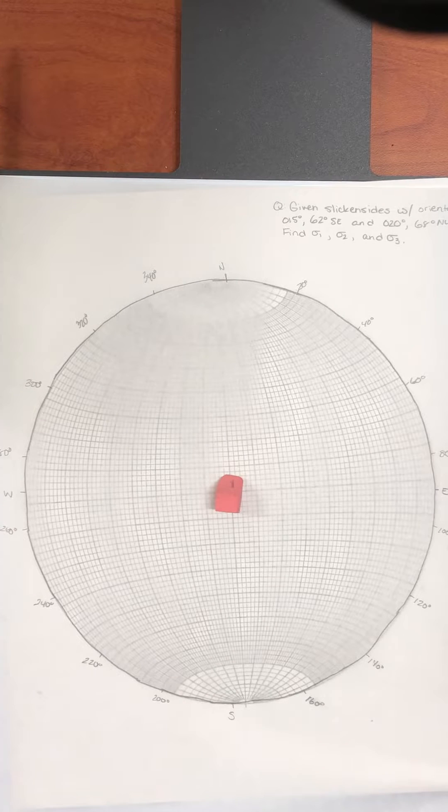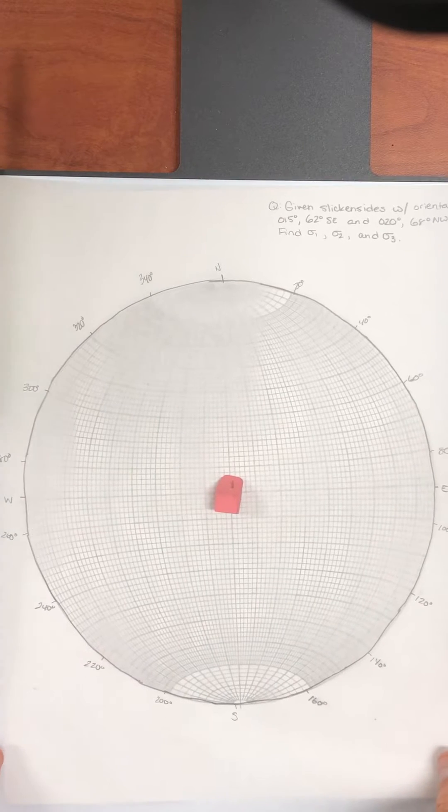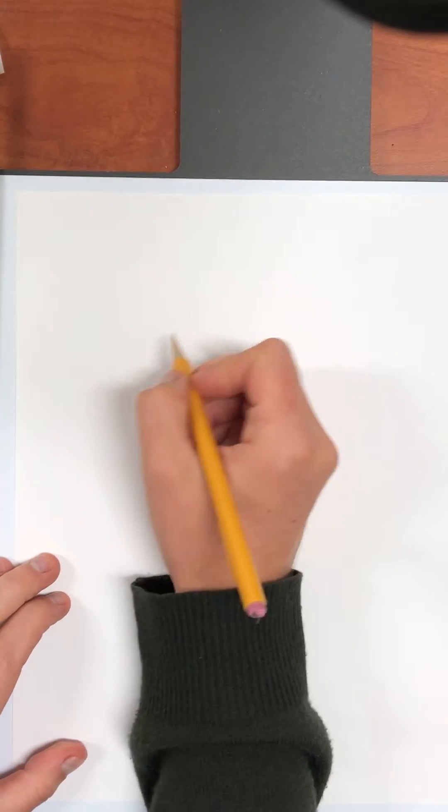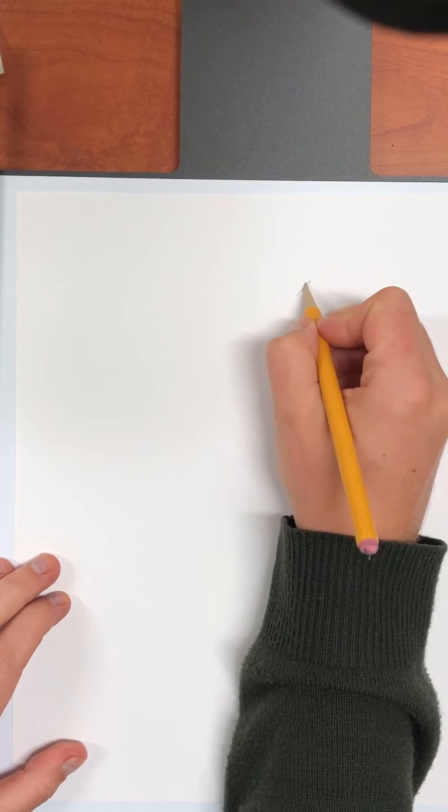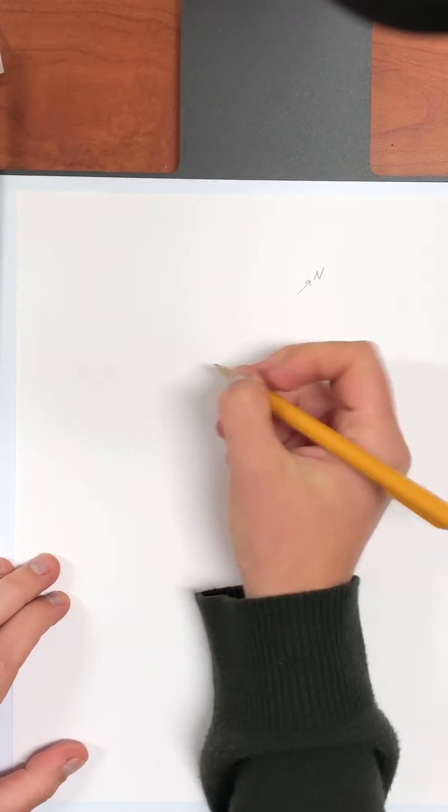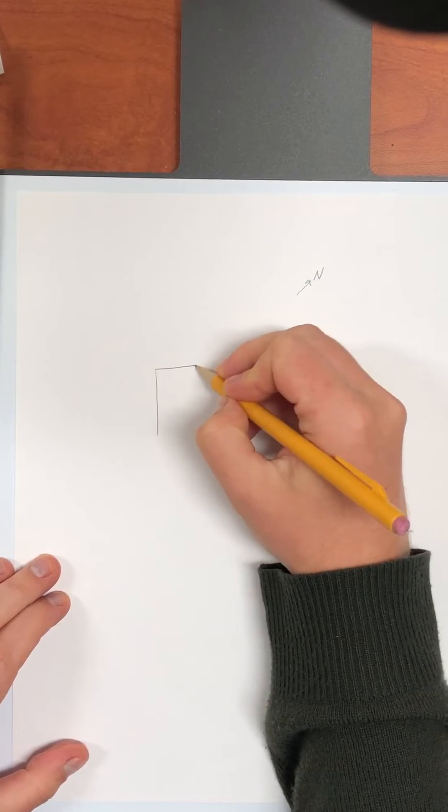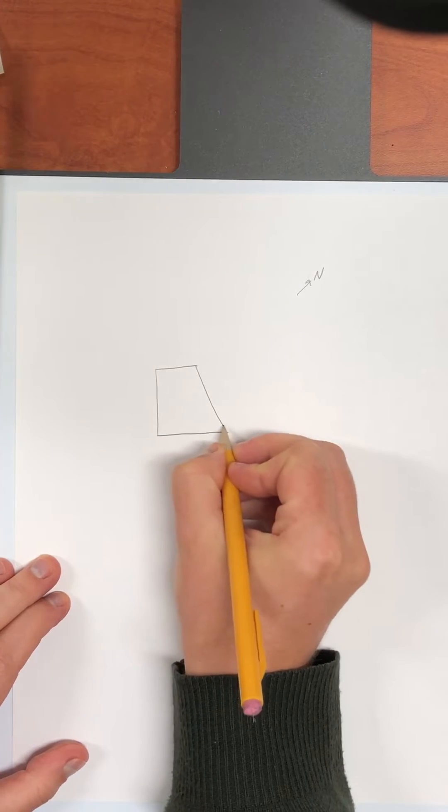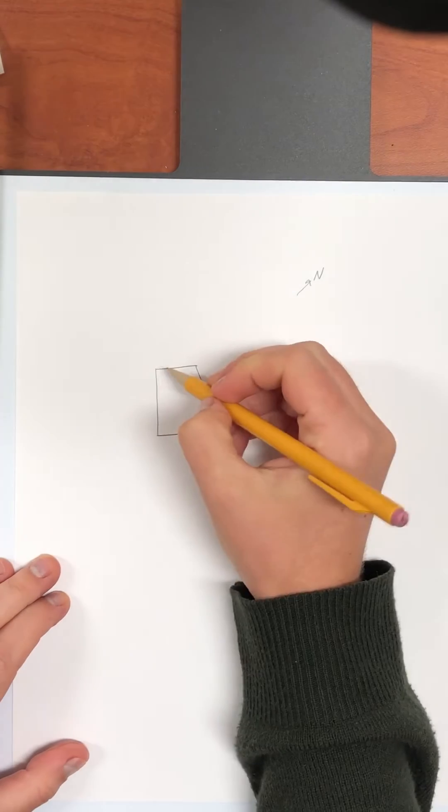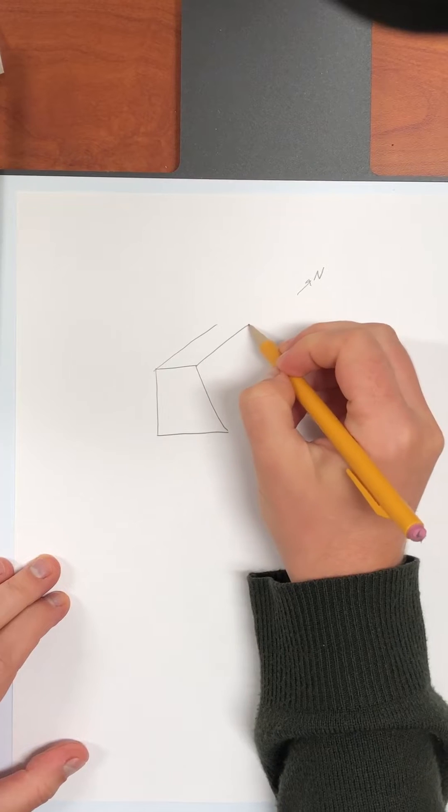So before we do that I want to just draw a picture of what that problem is actually asking you to do. So let's say that to the north is some direction out to the side. So maybe you're a geologist and you're doing fieldwork in an area with plenty of graben.